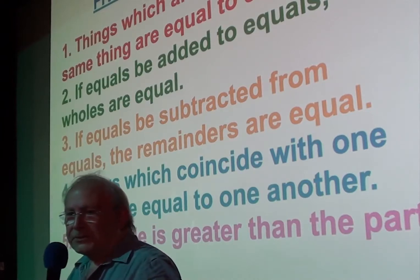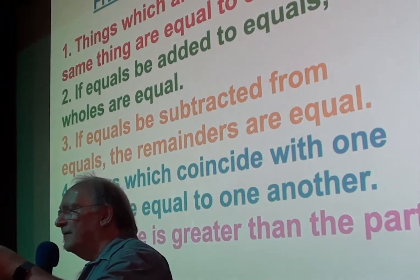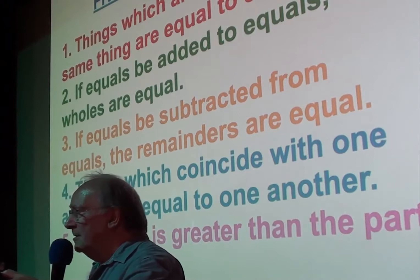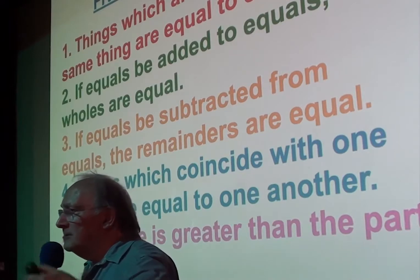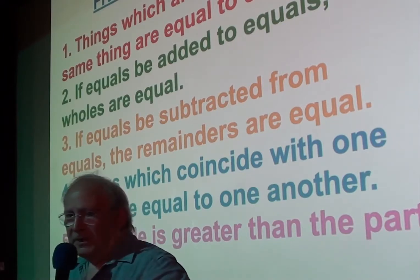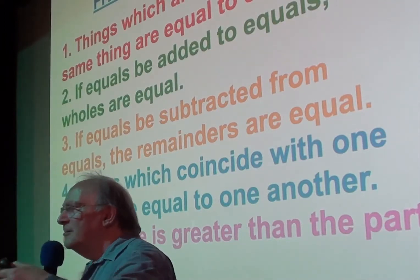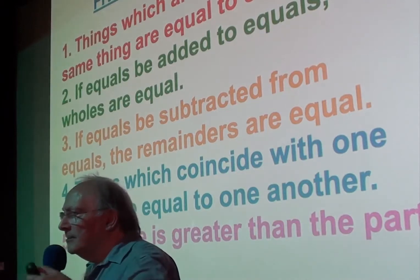Two. If equals be added to equals, the whole is equal. Right, so if Tim and I both have ten pounds, and Piano Man Dan gives us each two pounds, the same to each of us, we're still equal. If equals be subtracted from equals, so if Tim and I got ten pounds, Piano Man Dan takes away two pounds from each of us, we're still equal.